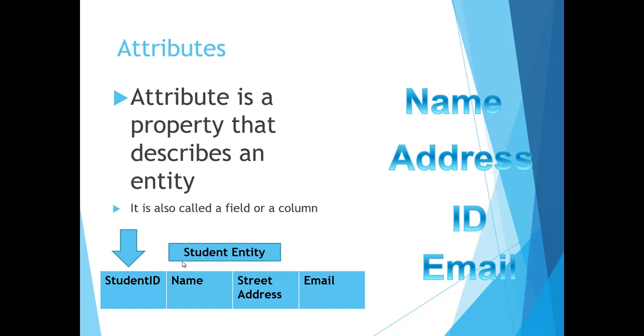So that attribute will be saved in what we call a column. For example, the fields or columns listed in this slide are attributes of student entity. So this is the main entity, student, but we put the attributes in columns. So we have student ID as one of the columns, and under that we can put student ID number 1, number 2, 3, and so on. The name, we put the first name, last name, street address for that student, email for that student, and so on. We can add as many columns as we need for that entity to describe that entity.